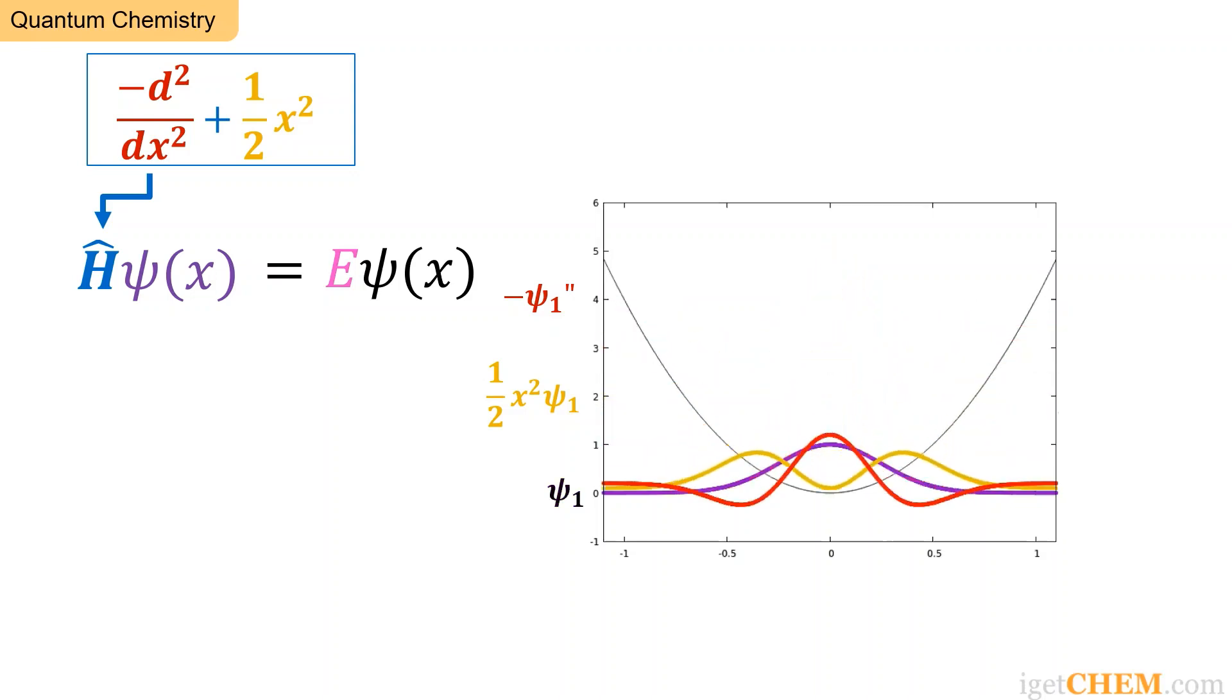In quantum chemistry, this H operator is associated with molecular vibrations and is called the harmonic oscillator. In this next example, we will return to the operator we looked at earlier, minus d squared dx squared.